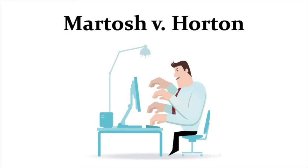The plaintiff wins, but you have to think about what Martosh actually had to go through. He discovers he's been defamed by this email. To enforce his rights, he first has to hire a lawyer to write the statement of claim, then pay the lawyer and pay the process server to try to affect personal service — which costs three times as much as it would because Horton is playing all these games and can't be tracked down.